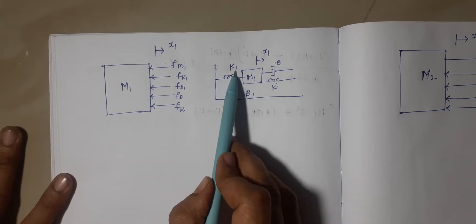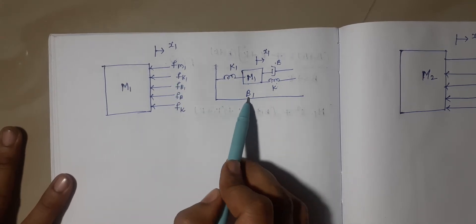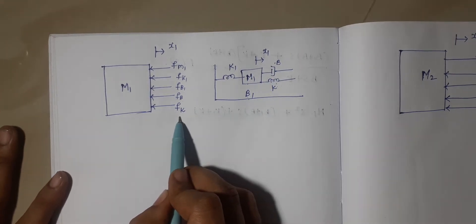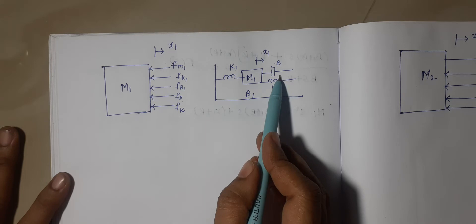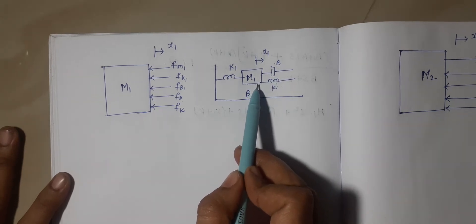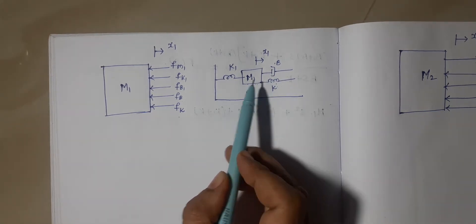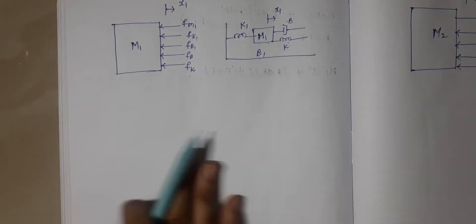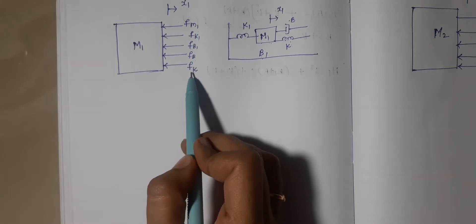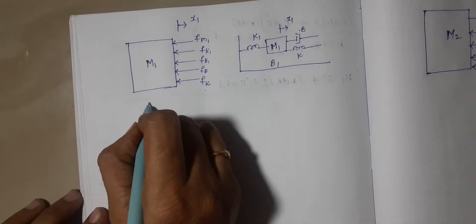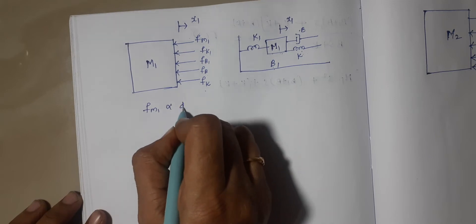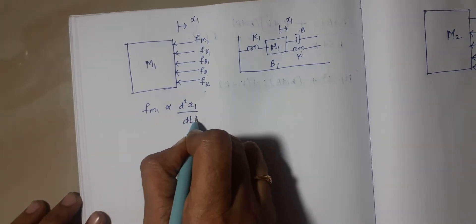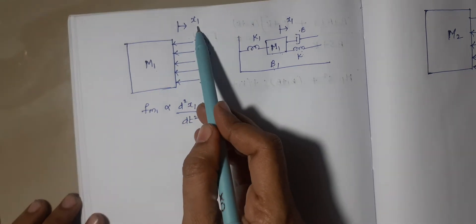In the free body diagram, the force offered by k1 is fk1, b1 is fb1, b is fb, and k is fk. Apart from these elements, mass m1 will also provide some opposing force, so I am writing it as fm1.